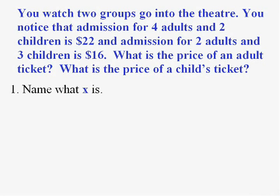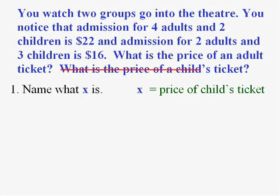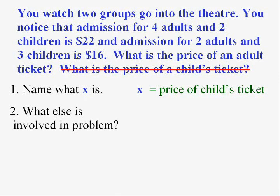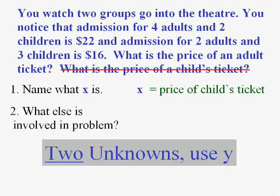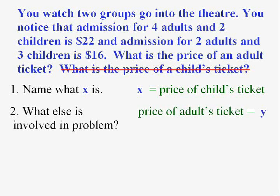So let's pick one of them to be X, just one of them. I'll let it be the price of a child's ticket because typically I try to let it be the smaller thing if you would. So I cross that out. Now in step two, what else is involved in the problem? Well quite obviously the other unknown, the price of an adult's ticket, and I'll let that be Y because it's different from X.